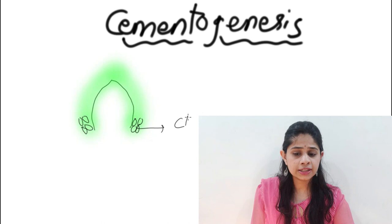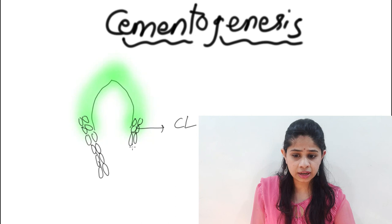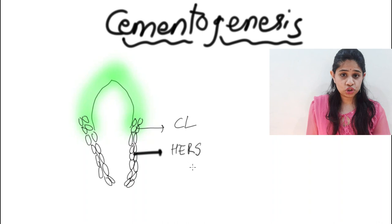In the next stage there is proliferation of the cervical loop in a manner that it forms Hertwig's epithelial root sheath, proliferating towards the apical aspect on both sides. Hertwig's epithelial root sheath is a bilayered tissue with two types of layers.